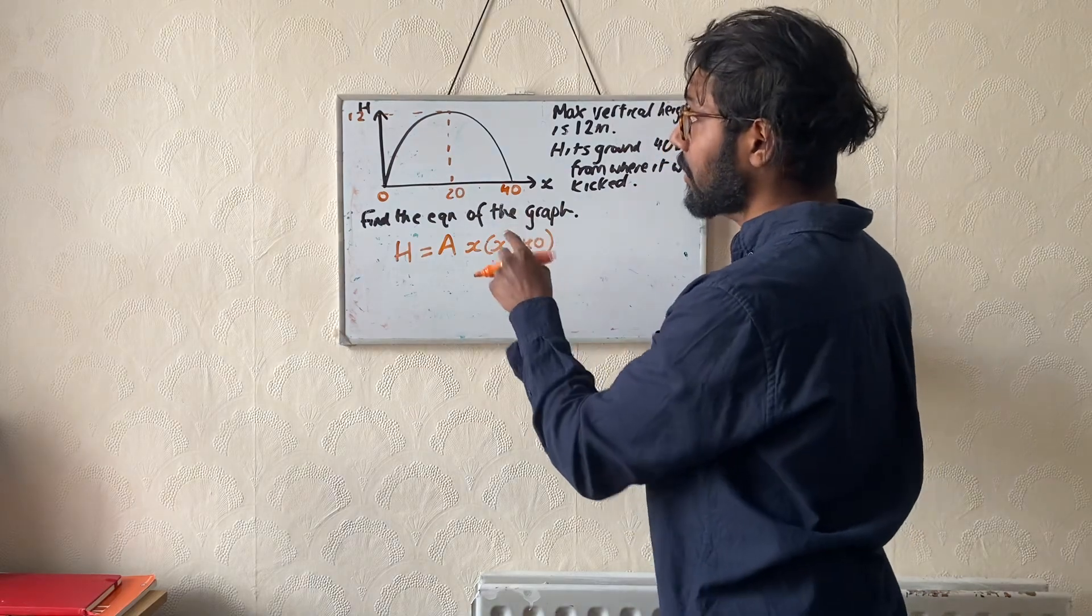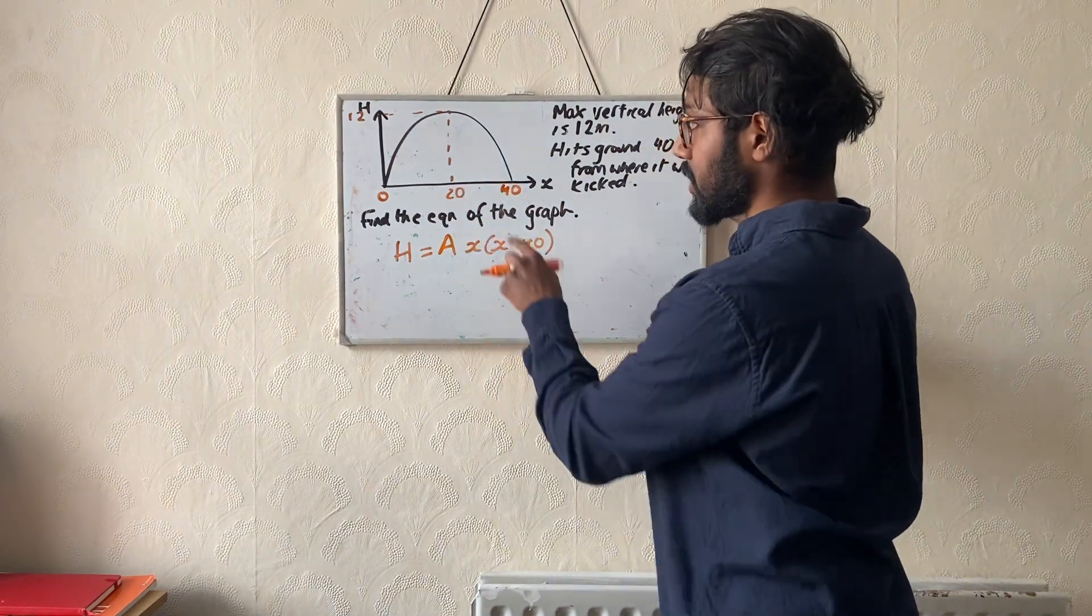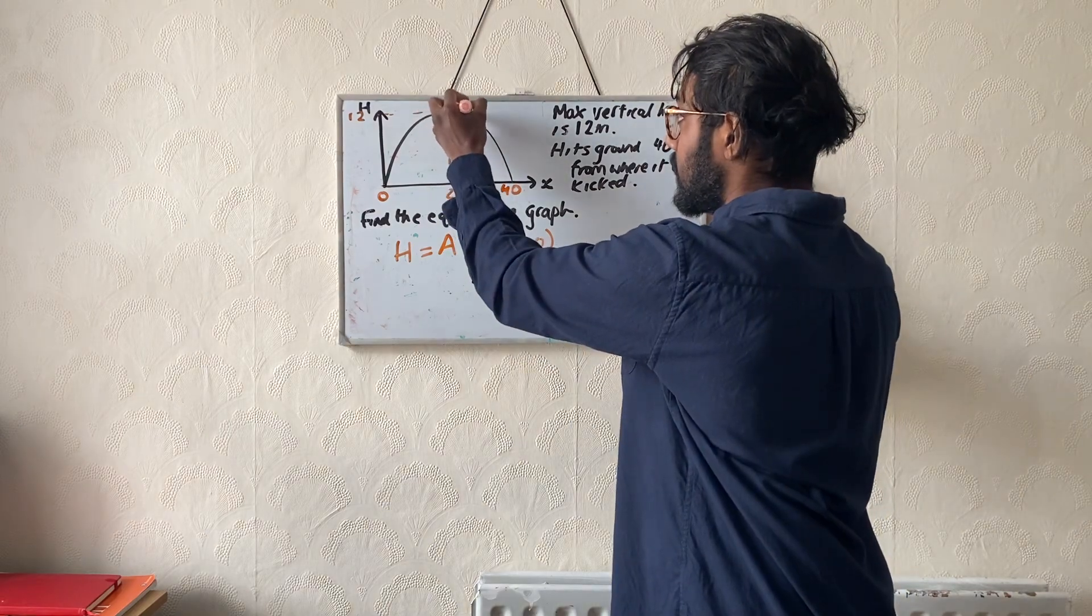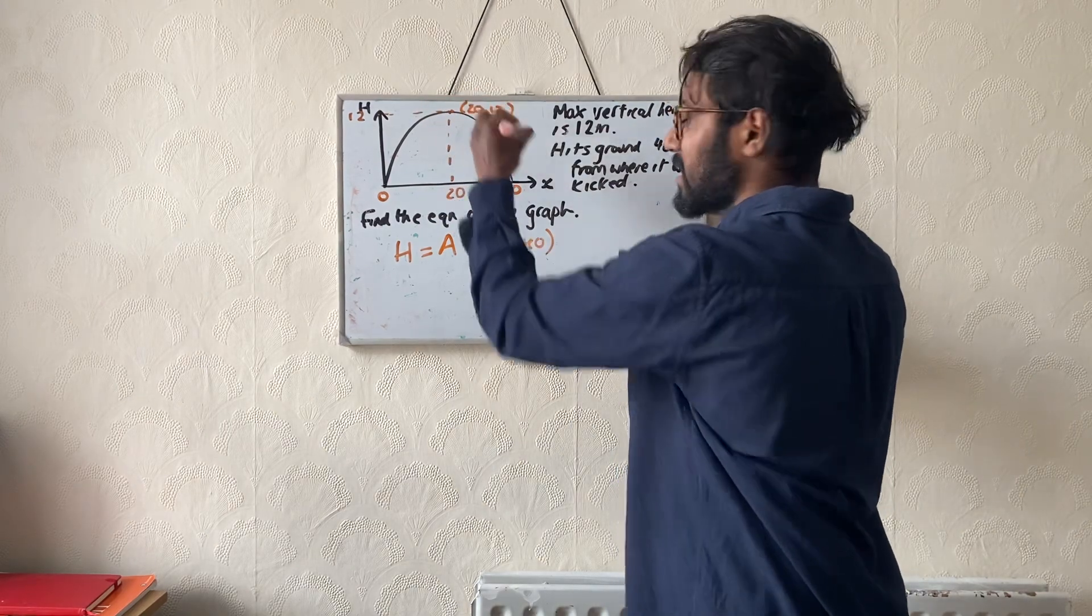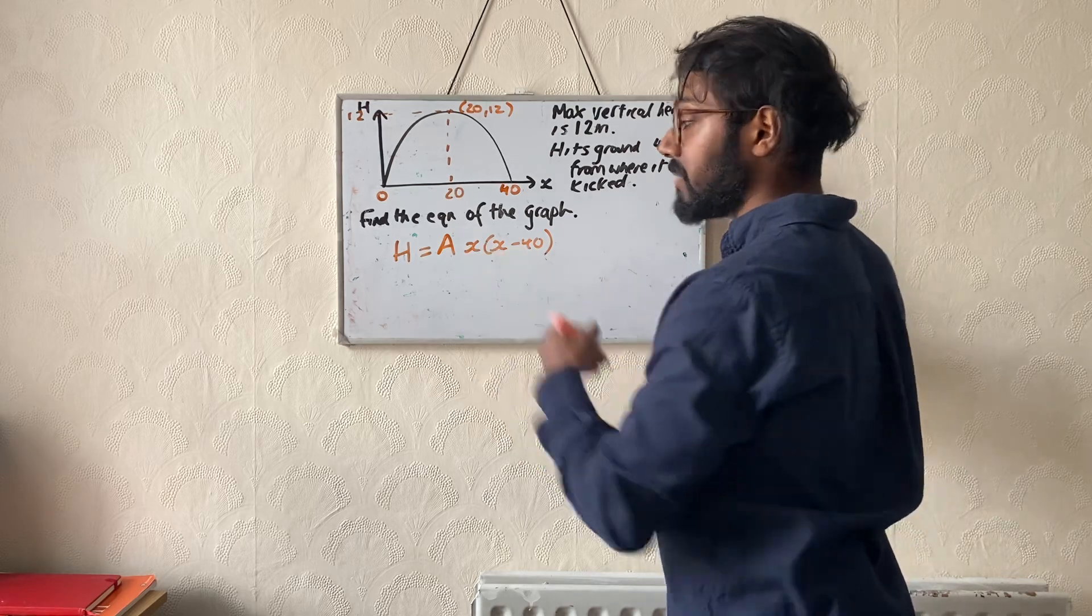What I'm going to do now is use the coordinate that I haven't used, which is the non-root coordinate, which is the turning point 20 comma 12. I'm going to substitute that in and that's going to give me the value of a.